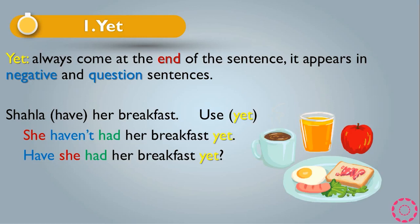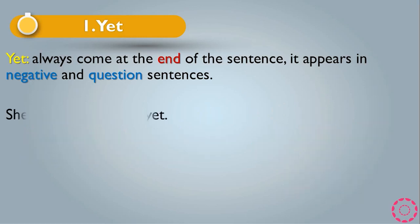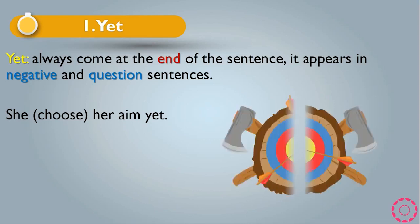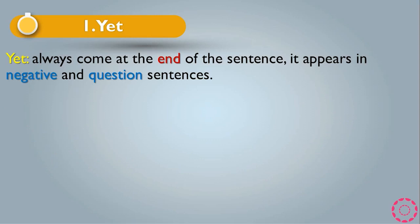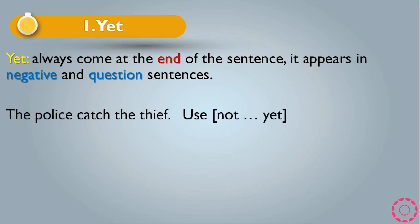Another example: 'She choose her aim' — use yet. The correct form becomes 'She has chosen her aim yet,' and as a question: 'Has she chosen her aim yet?'